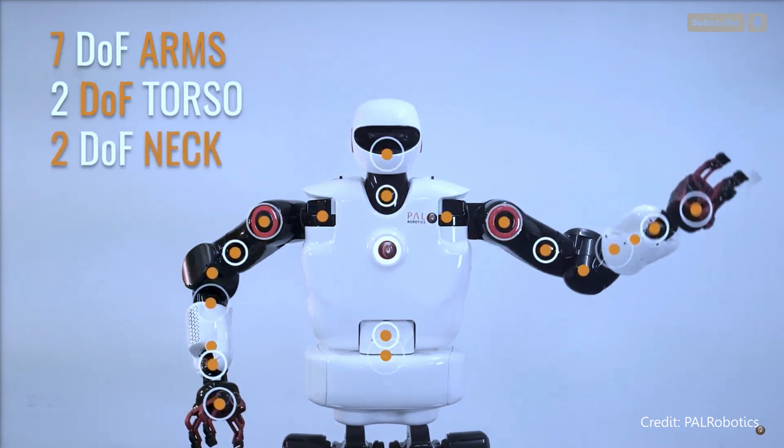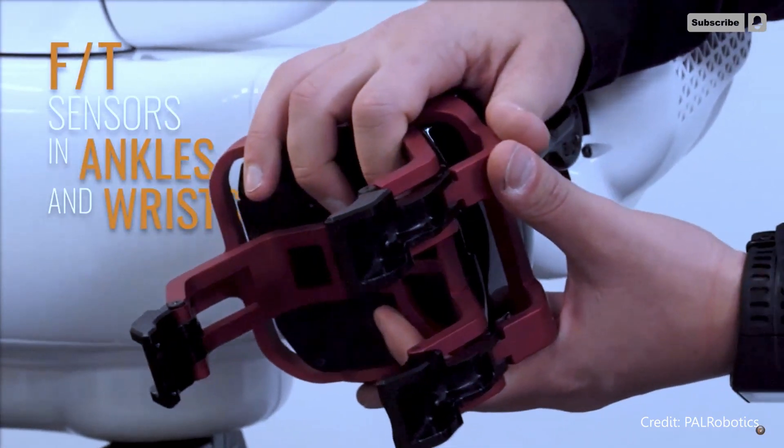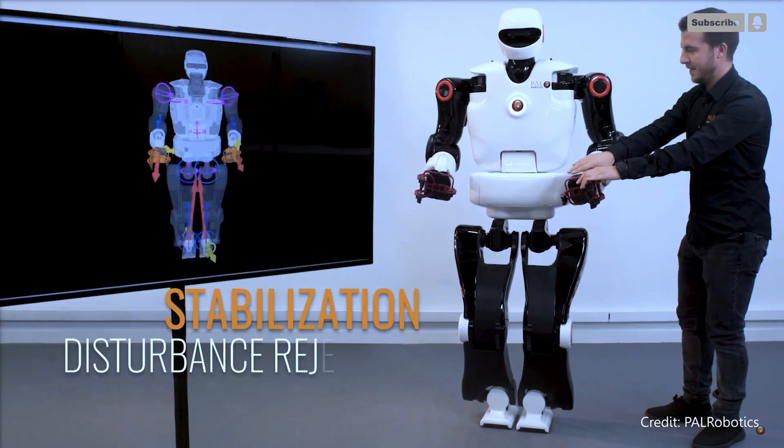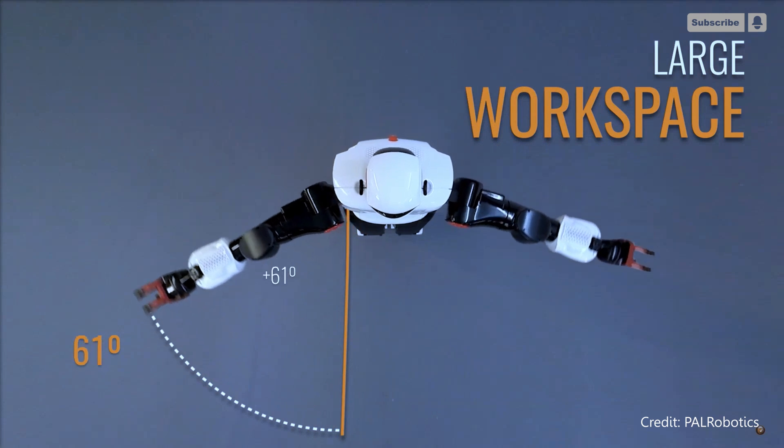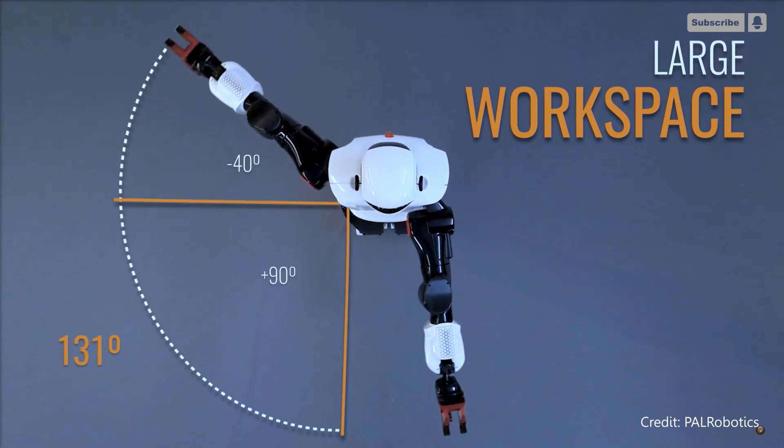The majority of these issues are addressed by the researchers in this work, with the main caveat being that they presume the location of the neighboring wall is known. However, if your robot is equipped with the appropriate sensors, you can easily solve this issue.